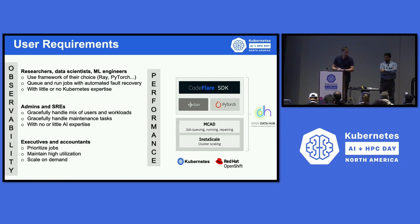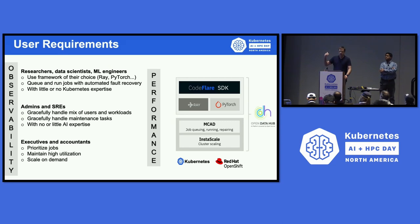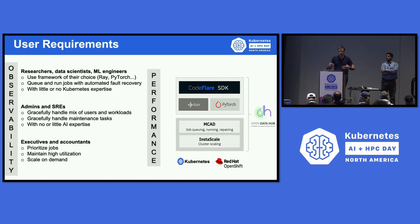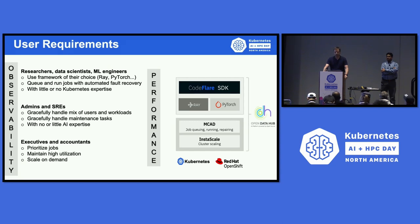To serve all these categories of users, we've been building a stack in open source. Everything we're going to talk about is part of a community called Open Data Hub. At the top, we have the ML expert-facing part of the stack, called the CodeFlare SDK — essentially Jupyter notebooks and Python that lets you describe, implement, and run jobs. At the bottom, we have Kubernetes or OpenShift. In the middle is the meat of today's talk: the workload management system, consisting of our mechanism to batch, queue, run, and repair jobs, plus the matching component for cluster auto-scaling.